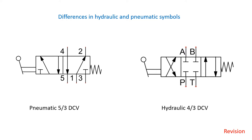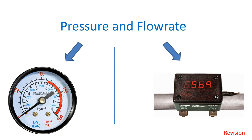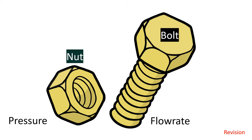Another important factor for hydraulics and pneumatics is the relationship between pressure and flow rate. These are two distinct phenomena that work together to provide mechanical advantage and the ability to do work. Think of it as a nut and bolt — by themselves they're pretty useless, but together they can do work. Pressure and flow rate have the same relationship: independently they're useless, but together they can perform work, exert a force, and move something.